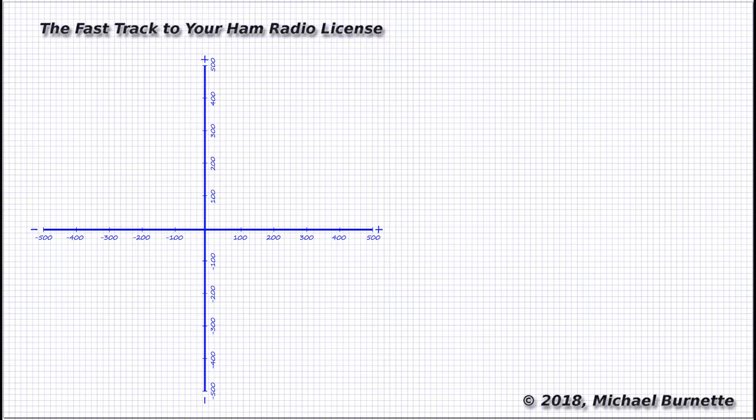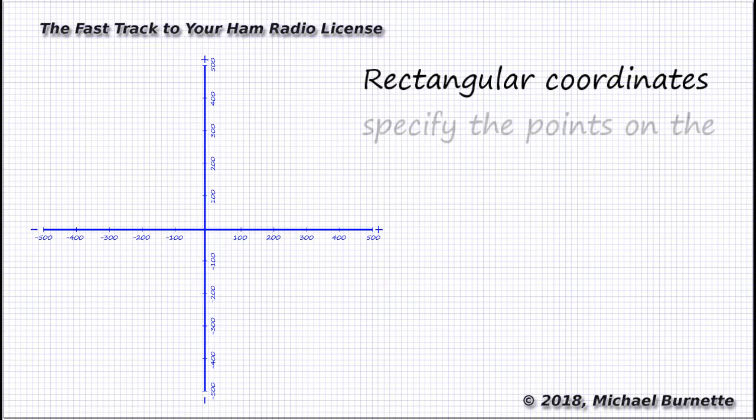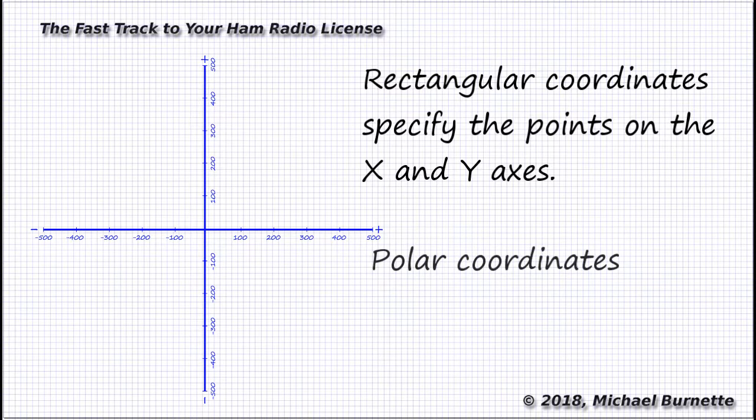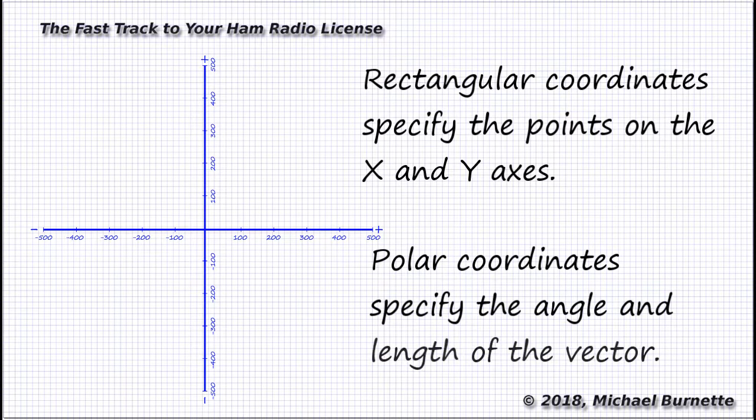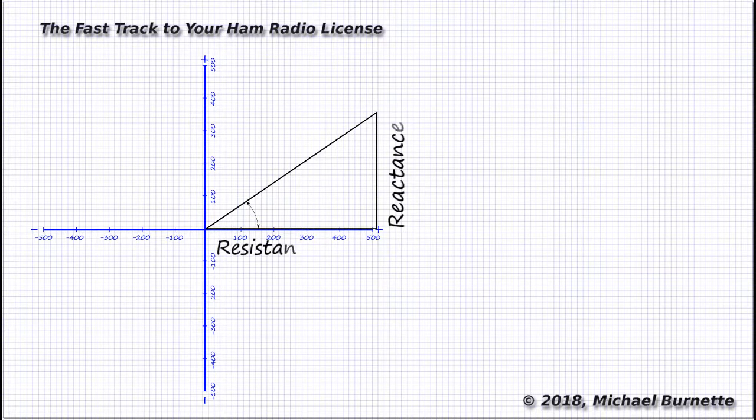Because the exam asks about both rectangular and polar coordinates, it's important to get the distinction, which is really a pretty simple one. Rectangular coordinates specify the points on the x and y axes. Polar coordinates specify the angle and length of the vector, or the hypotenuse. Realize, too, that in practice, no matter which set of coordinates we use, we end up with basically the same picture and the same values for the reactances, the impedance, and the phase angle. Ralph ends up in the same spot.